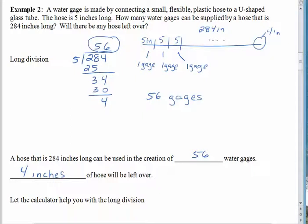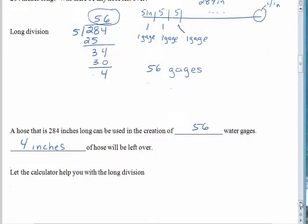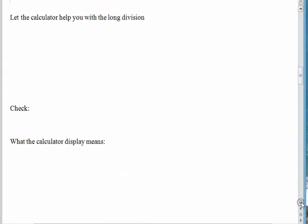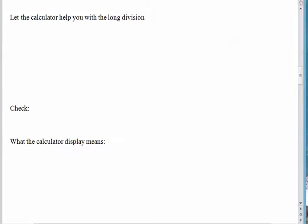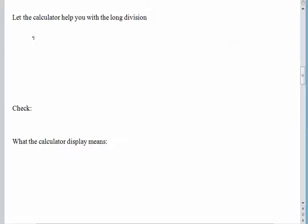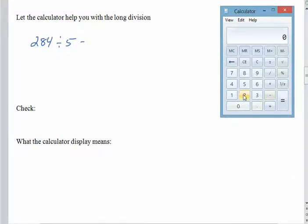So let me bring our calculator over here a little bit. And scroll up the page as well. So this is the Microsoft calculator. One of these days I'll get your actual TI-30 calculator in this video, but not today. What we were trying to do before was 284 divided by 5.